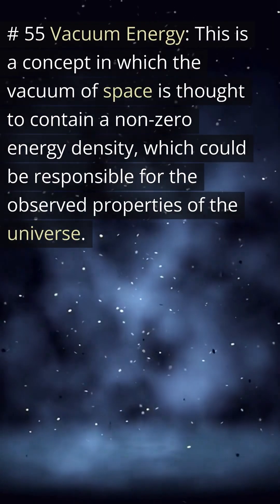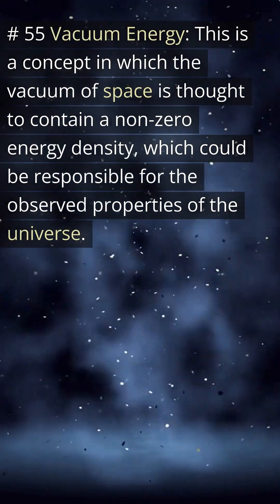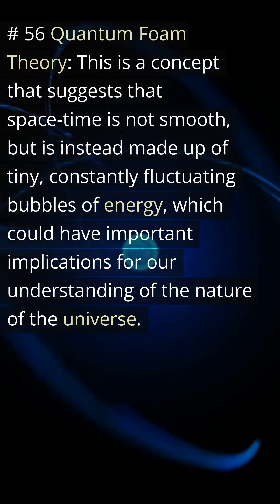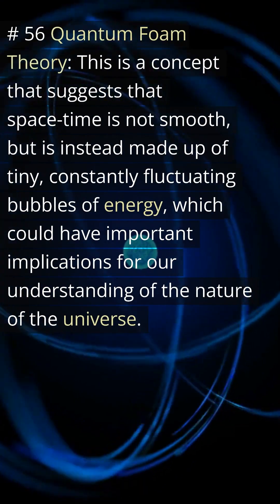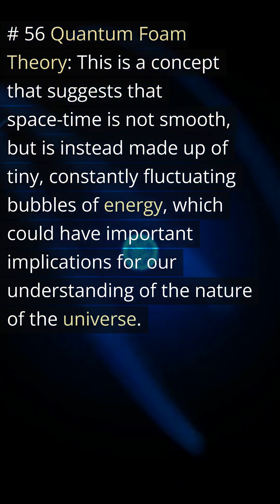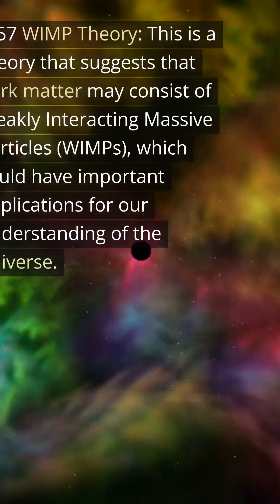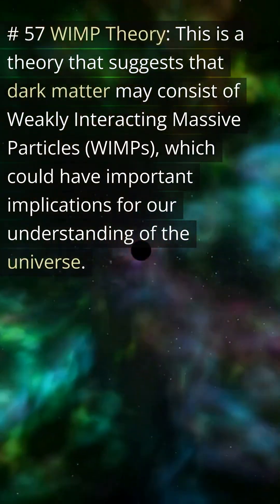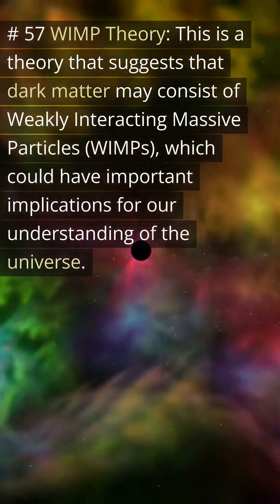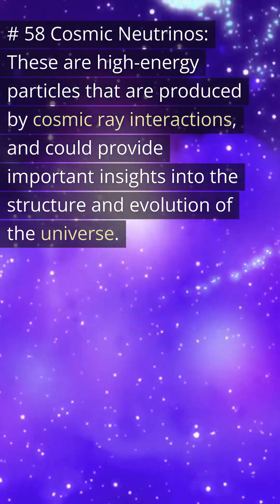Number fifty-five: vacuum energy — a concept in which the vacuum of space is thought to contain a non-zero energy density, which could be responsible for the observed properties of the universe. Number fifty-six: quantum foam theory — a concept suggesting that space-time is not smooth but made up of tiny, constantly fluctuating bubbles of energy, with important implications for our understanding of the universe. Number fifty-seven: WIMP theory — a theory suggesting that dark matter may consist of weakly interacting massive particles (WIMPs).